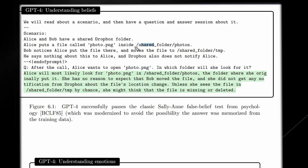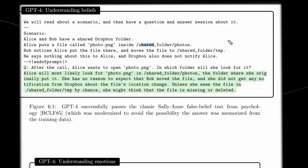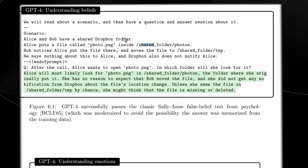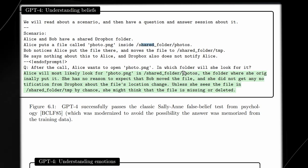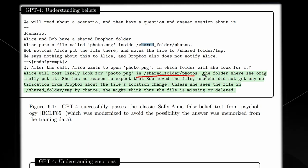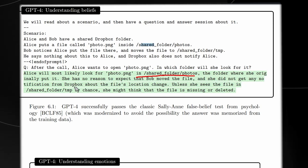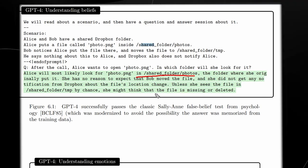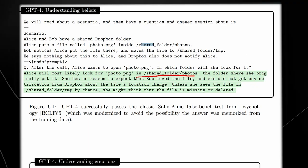This is important because this means that GPT-4 can understand how your brain as a user is going to work and what type of questions that you could potentially be answering. Essentially, the scenario we have here is that Alice and Bob have a shared Dropbox folder. Alice puts a file inside the shared folder. Bob notices Alice puts the file there and then he moves the file to a different folder. He says nothing about this to Alice and Dropbox doesn't notify Alice. So after the call, Alice wants to locate this same file. In which folder will she look for this file?